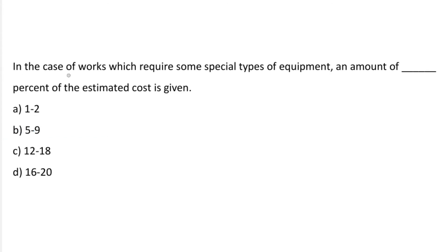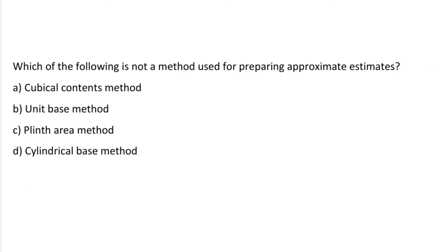Next question: in the case of works which require some special types of equipment, an amount of what percent of estimated cost is given? Option A: 1 to 2 percent. Option B: 5 to 9 percent. Option C: 12 to 18 percent. Option D: 16 to 20 percent. The correct answer is option A, 1 to 2 percent.